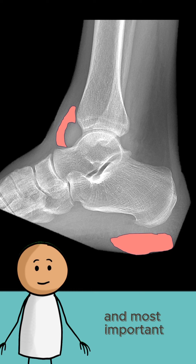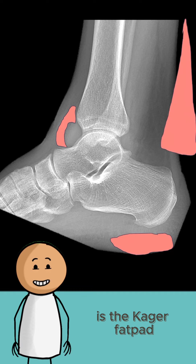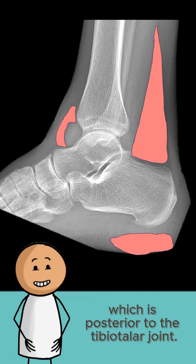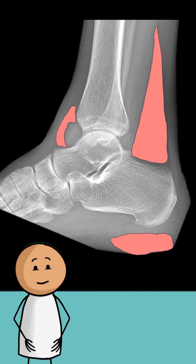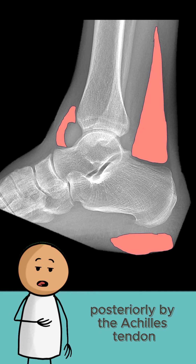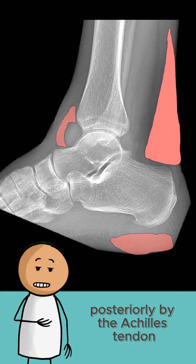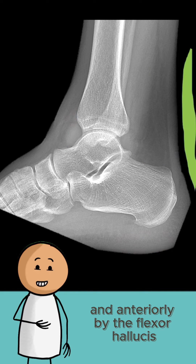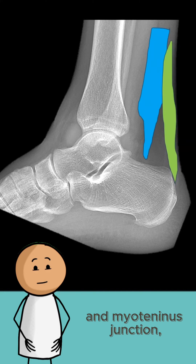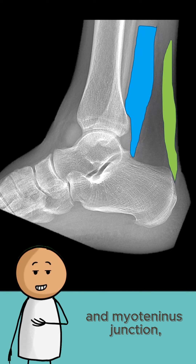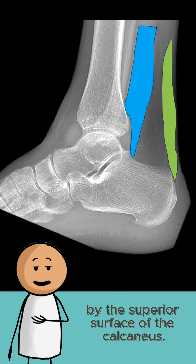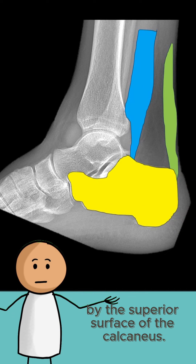The third one, and most important, is the Kager's fat pad, which is posterior to the tibiotalar joint. The Kager's fat pad is bordered posteriorly by the Achilles tendon, anteriorly by the flexor hallucis longus muscle and myotendinous junction, and inferiorly by the superior surface of the calcaneus.